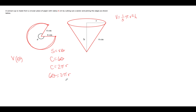The goal is to express r in terms of theta. We can do that by dividing both sides by 2 pi, and we find that the radius of the circular base of this cone can be expressed as 3 theta over pi when we simplify. So now we have r expressed in terms of theta.